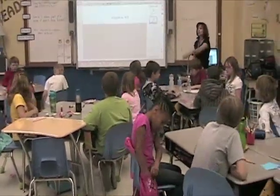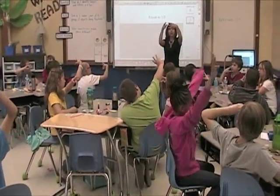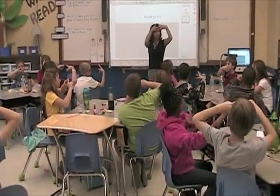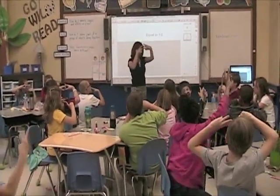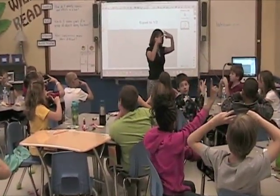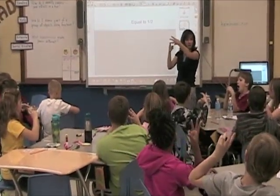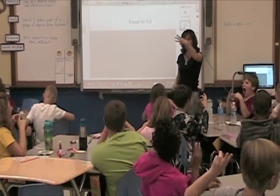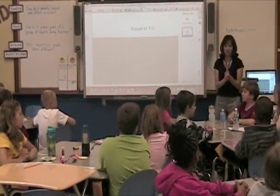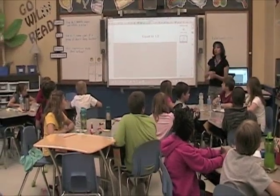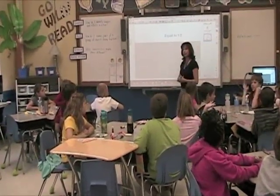Excellent job. Show me your three fingers. We know that there are some fractions that are equivalent to one half. We know that there are some fractions that are equivalent to one. And we know that there are some fractions that are called equivalent — they look different but have the same value. So these are the three things we are going to practice today. Hands and eyes. We are going to do some example poppers for fractions that are equivalent to one half.